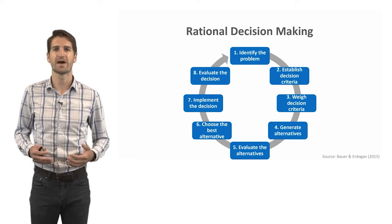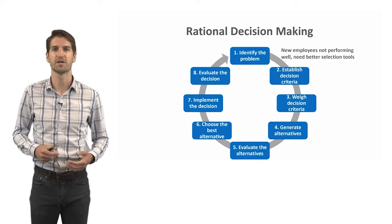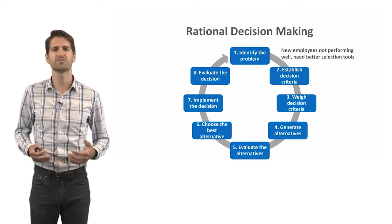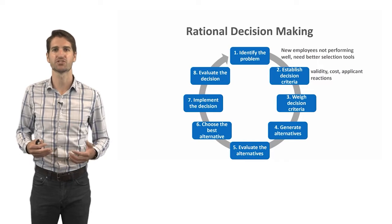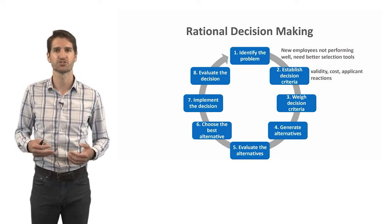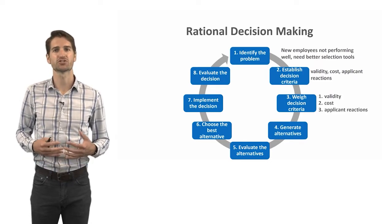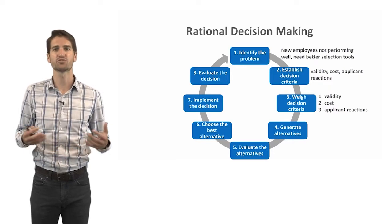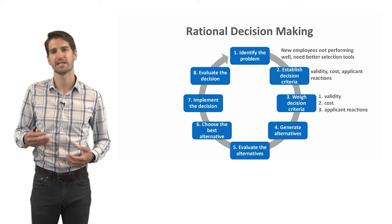Let's look at how the rational decision making model might unfold in the selection context. Starting with identifying the problem: imagine new employees are not performing well, and we've determined we need better selection tools to identify applicants likely to be high performers. We can then establish decision criteria—perhaps criterion-related validity, the cost of the tools, and applicant reactions. We then apply weights, deciding that validity is the most important criterion, followed by cost and then applicant reactions.